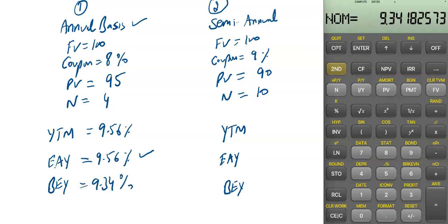Bond equivalent yield is the YTM calculated on a semi-annual basis. To summarize: calculate the annual yield of the bond — that is both the nominal and the effective rate. Then change the compounding to 2 in the I-conversion function and calculate the nominal yield again. That is your bond equivalent yield.